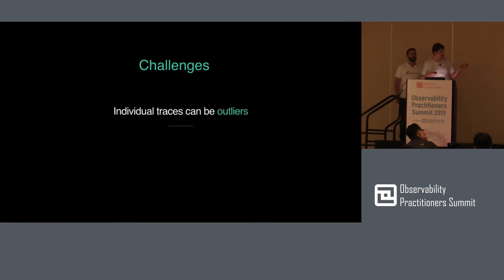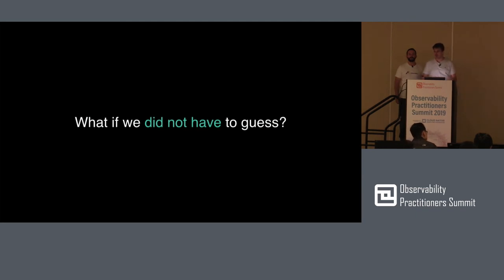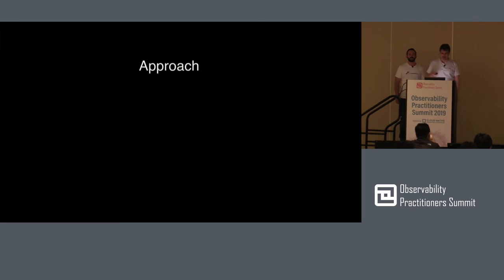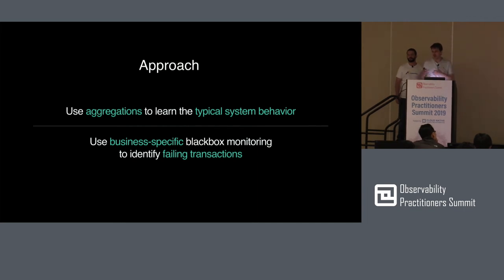Nonetheless, these diff views still have the same challenge — individual traces could be outliers. Now we have two of them, but we still have to pick them, and it's up to the user to pick the right one. Can we do better? What if the system did that for us? That's the approach we want to talk about. We built this at Uber — we want to aggregate a bunch of traces that represent good behavior of the system, learn from them a statistical model of that behavior, and then when something bad happens, overlay the bad request with the good model and compare the differences.